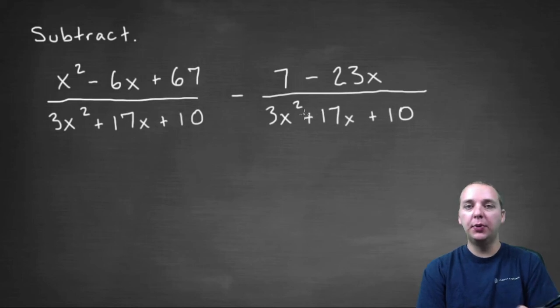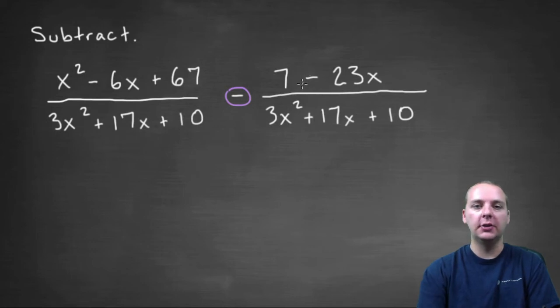Alright, let's try to subtract these two pretty big rational expressions. So a couple things I noticed before we begin. One, this is a subtraction problem, so when the time comes we're going to distribute that negative sign through all the terms in the numerator for the second expression.